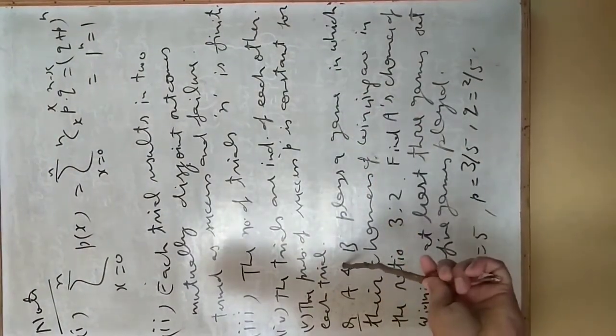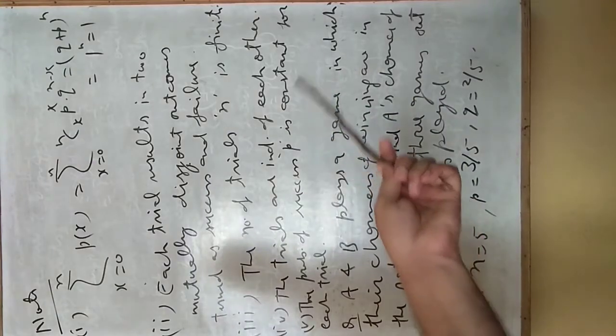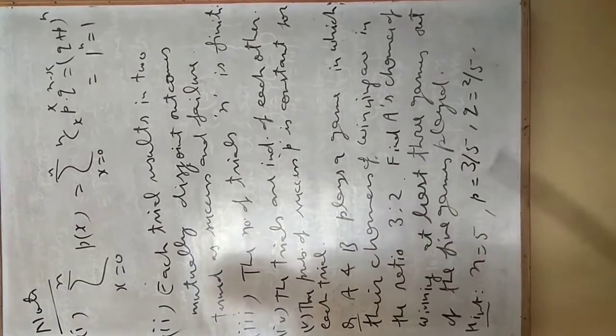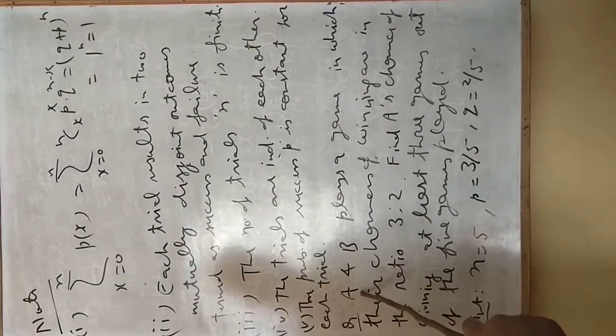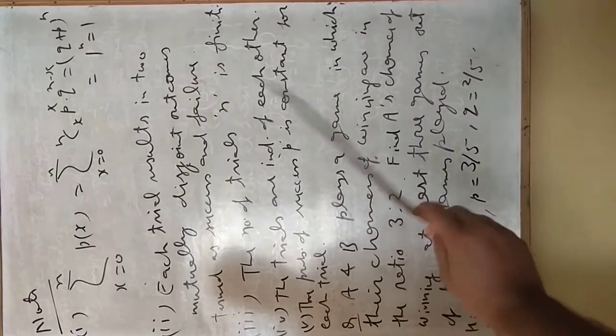Each trial is independent, and the probability of success p is constant for this trial. For this trial, we have this p as a constant. Now a question for practice: there are two players A and B.